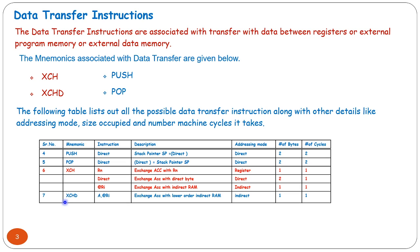The next instruction is XCHD A, @Ri — exchange the lower nibble of the accumulator with the lower order nibble of the indirectly addressed RAM location. Only the lower 4-bit nibble of RAM content and the lower nibble of the accumulator get exchanged; the upper nibble remains as it is. This is an indirect addressing instruction, 1 byte, 1 machine cycle.